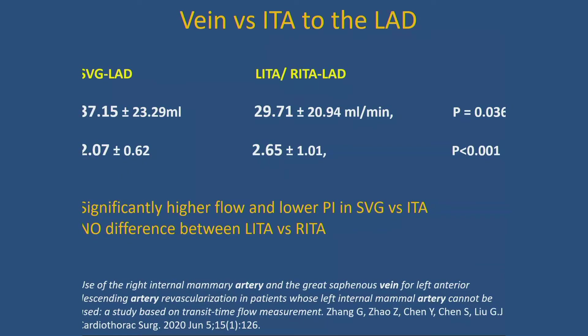A common question: is there a difference between veins versus mammary in terms of graft flow? A very interesting 2020 study looked only at LAD targets, comparing vein to LAD, right mammary to LAD, and left mammary to LAD. Despite the LAD being the best target with the largest runoff, flow in the vein is significantly higher than in the mammary. However, flow in left mammary versus right mammary to LAD is equal. So with a vein, you will always have significantly higher flow than with an artery.